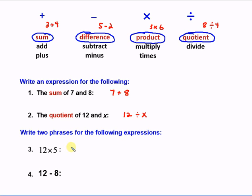Now we can write some phrases for these symbols that we have down here. What are some ways to say this? Well, we could say the product of 12 and 5. So the product of 12 and 5. Or we could say 12 times 5. Or we could say 12 multiplied by 5.